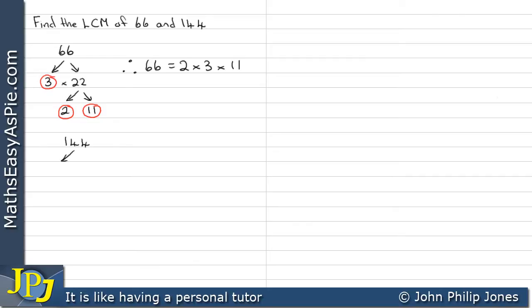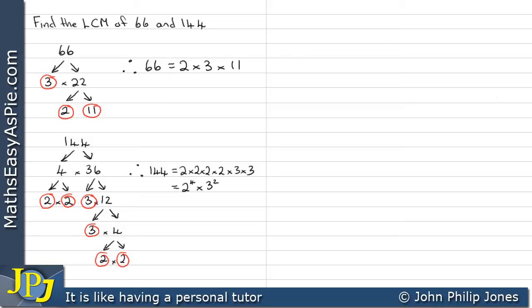We do the same thing for 144. We go through this, producing the factor tree, and we can see that we will end up with all the prime factors for 144. Now, if we highlight them now, we can see we have the following. Therefore, 144 is as follows, which we can write out as 2 to the 4 times 3 to the 2.